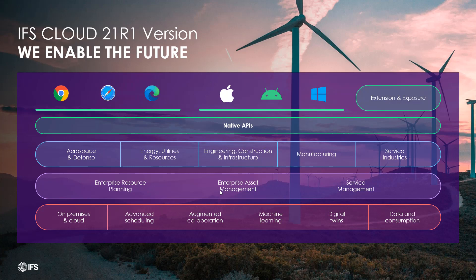We provide that on one platform, so you have one point to go into one system to look at all that information. We do call this the IFS Cloud 2021 R1 version, but we do offer this both on premise and in the cloud. So you can have a remote installation wherever you may need it to be on your corporate servers, and IFS does offer the managed cloud services, so you can run it on both.